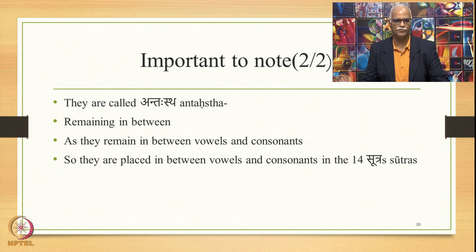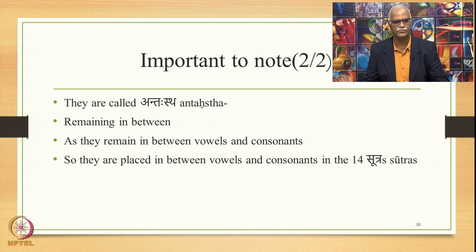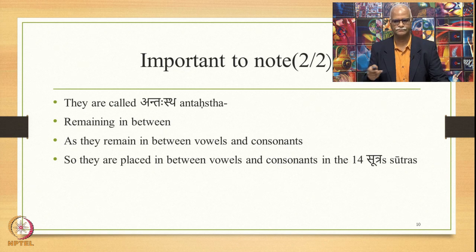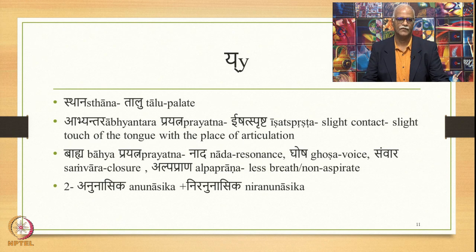They are called Antastha because they remain in between vowels and consonants. They are also placed in between vowels and consonants in the 14 Sutras. Let us look at these consonants one by one.